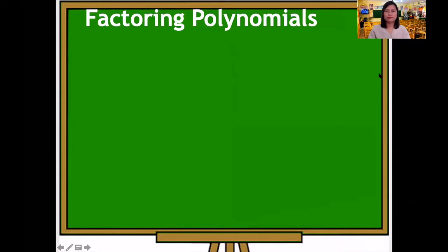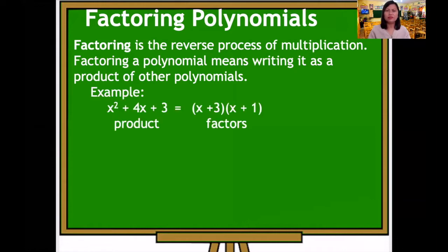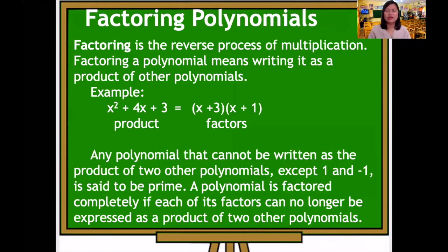Factoring is the reverse process of multiplication. When we say factoring a polynomial, it means writing it as a product of other polynomials. For example, x squared plus 4x plus 3 is the product, and the factors are x plus 3 and x plus 1. Any polynomial that cannot be written as the product of two other polynomials, except 1 and negative 1, is said to be prime.